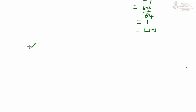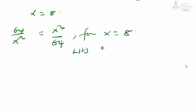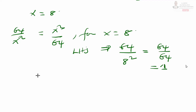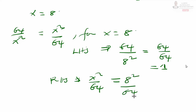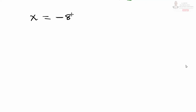We can also test for x equal to positive 8. We have our expression as 64 divided by x squared equals x squared divided by 64. For x equals 8, on the left hand side, 64 divided by 8 squared gives 64 divided by 64, which is 1. On the right hand side, 8 squared divided by 64 gives 64 divided by 64, and the answer is 1. Therefore, both x equals negative 8 and x equals positive 8 are correct.